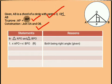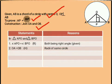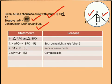Secondly, OA is equal to OB, both being radii of the same circle and acting as the hypotenuse of the right angle triangle. Thirdly, OP is equal to OP, being the common side for both triangles APO and BPO.